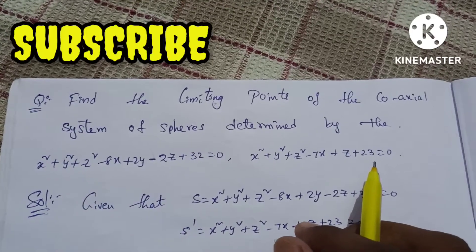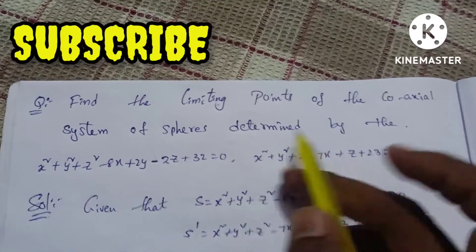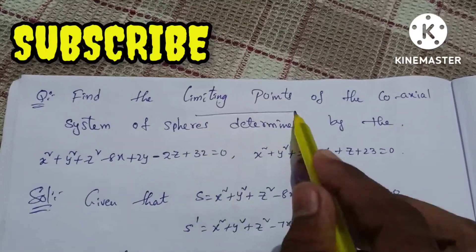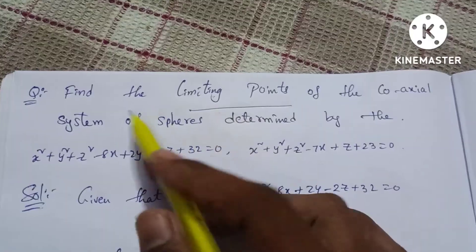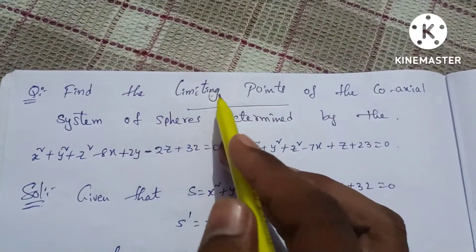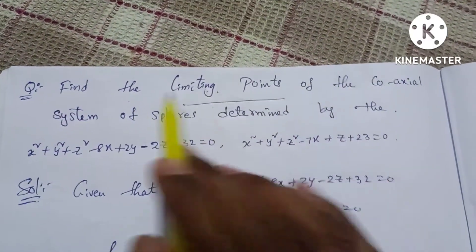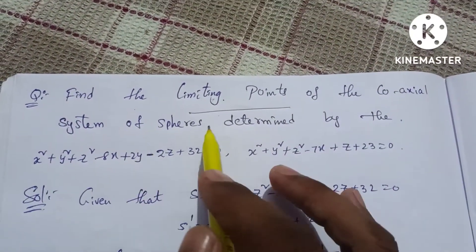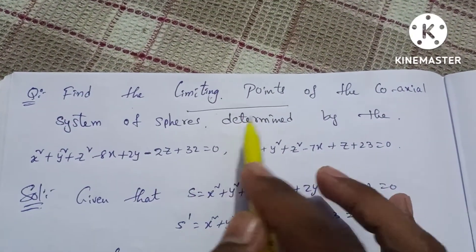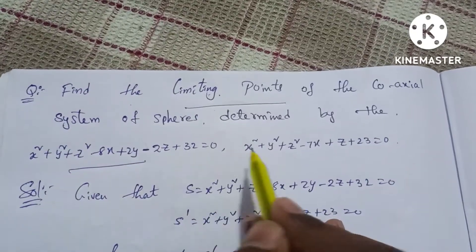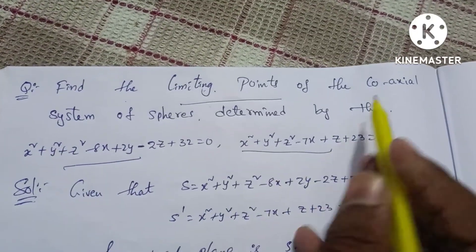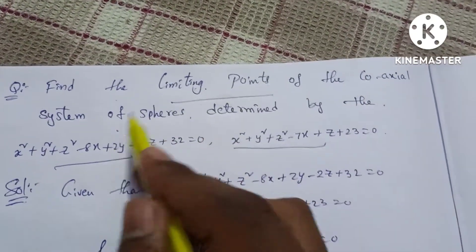In this video, the 4th problem of limiting points is to find the limiting points of the coaxial system of the spheres. The coaxial system will give us the limiting points.